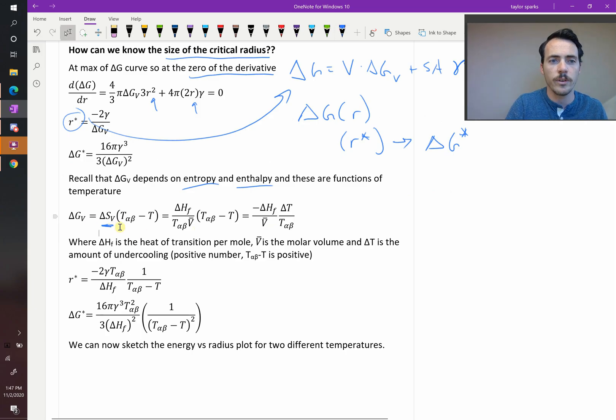So plugging those in, we now have an expression for delta G_V. It takes into account a couple things. First off, what's the temperature where thermodynamically you expected the transformation to occur? We call that T alpha beta.